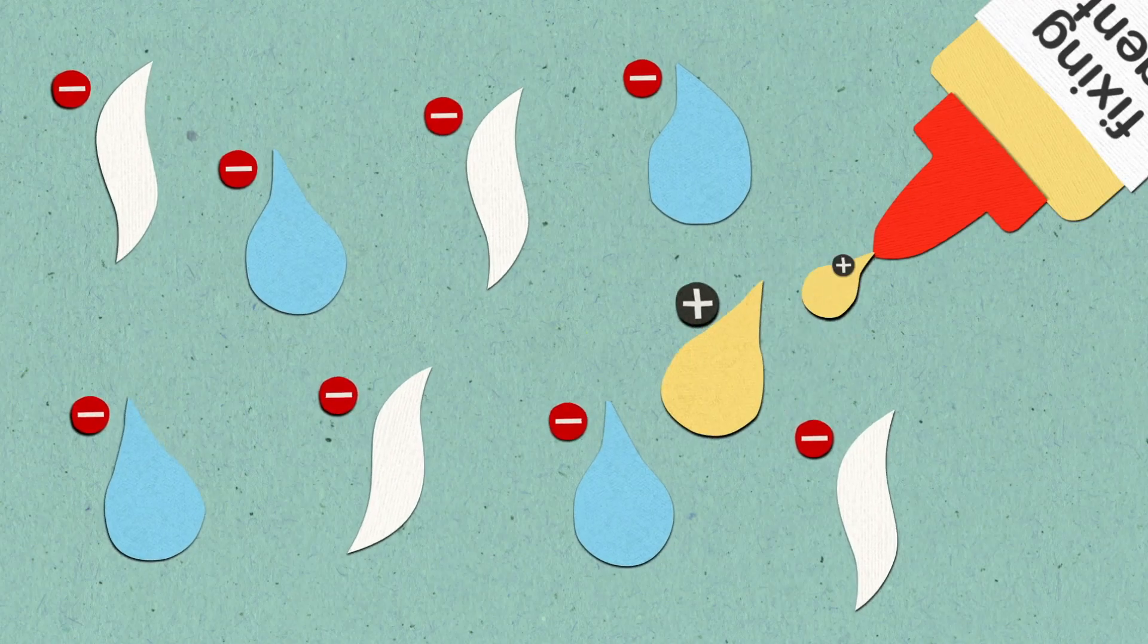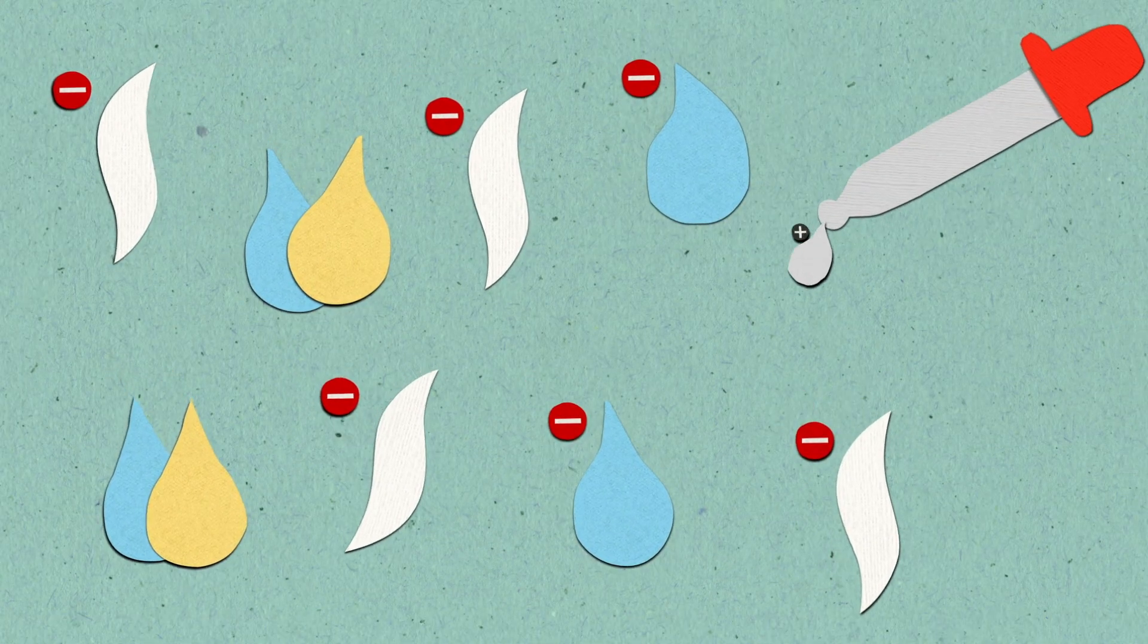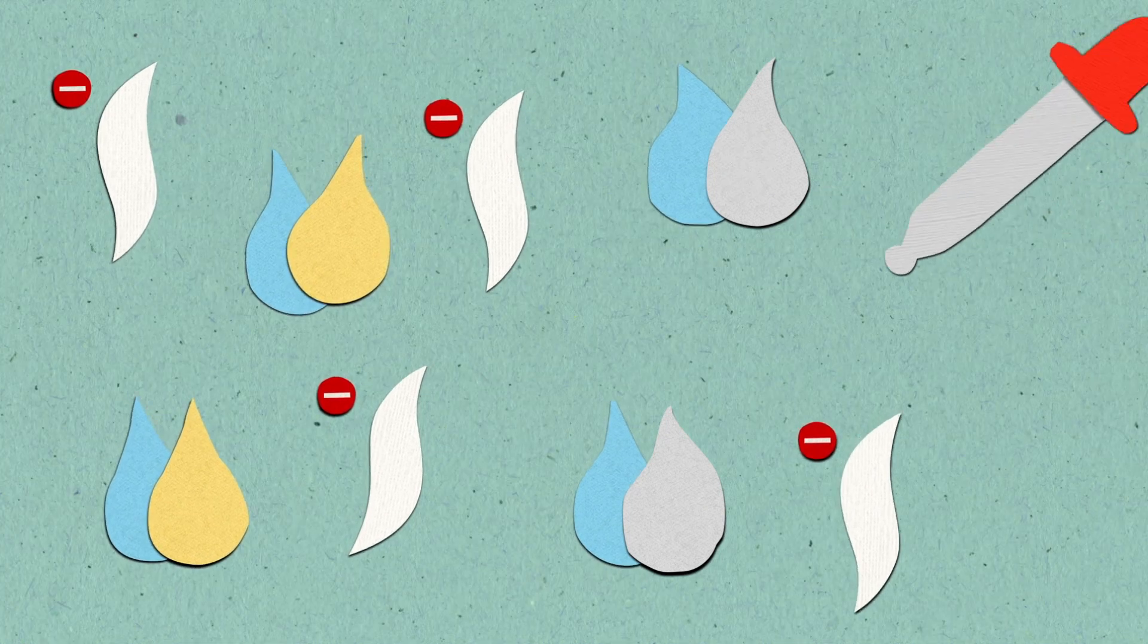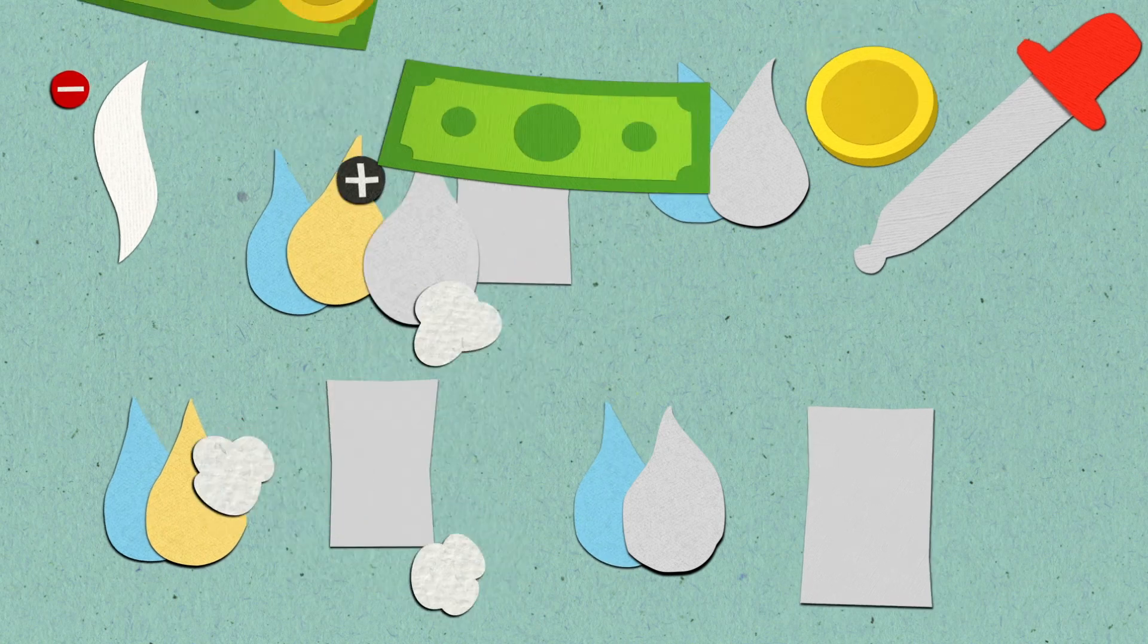If not enough fixing agent is added, then the remaining negative charge in the water will consume the value adding agents designed to be for the fiber. So we will need to add more of these and more money will be spent to deliver the same performance.